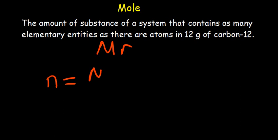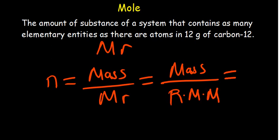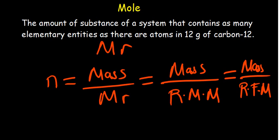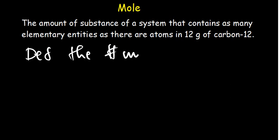Each time we are determining the number of moles, the number of moles is given as the mass divided by the molar mass. This formula can change to mass over relative molecular mass when you are talking about a molecule, or mass over relative formula mass when you are talking about a compound. The mass is always going to be on top.